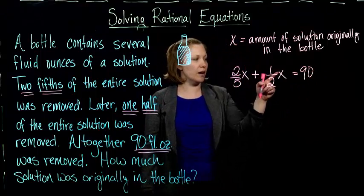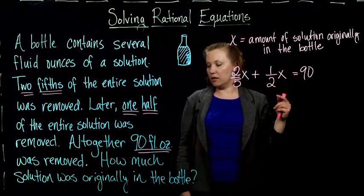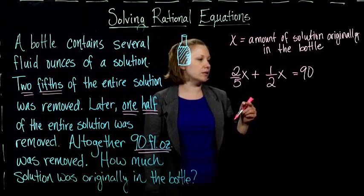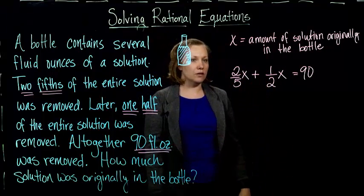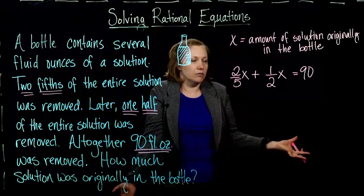I took two-fifths of the original amount, one-half of the original amount, put that together. They tell us that's 90 fluid ounces. Now I just have to solve this rational equation.